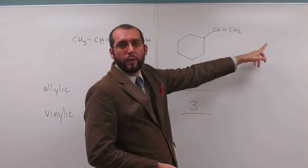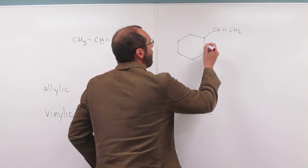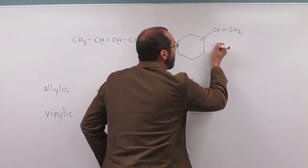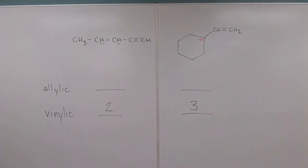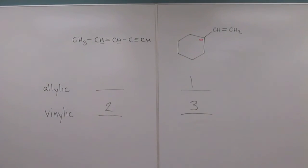There's, well, there's no carbons over here, and there's only one carbon over here, right? So that must be the alpha carbon. So how many hydrogens are attached to that alpha carbon? Just one. Very good. So we say we have one allylic.